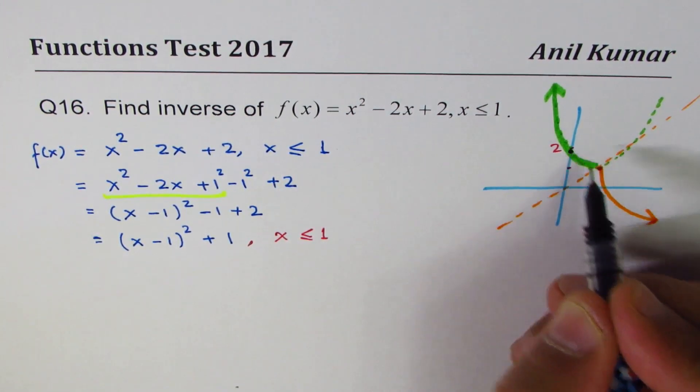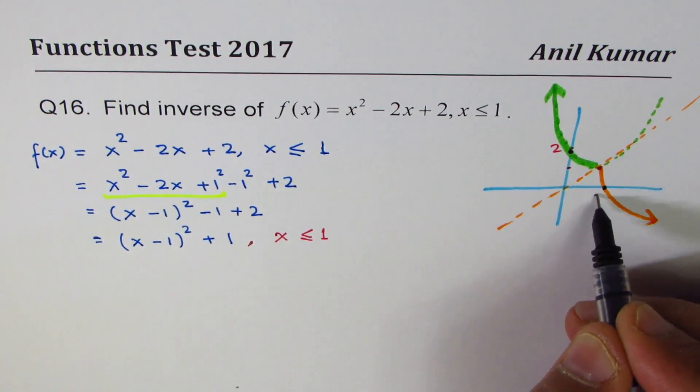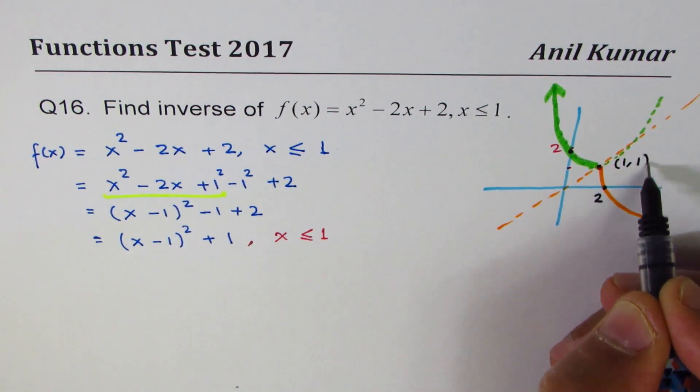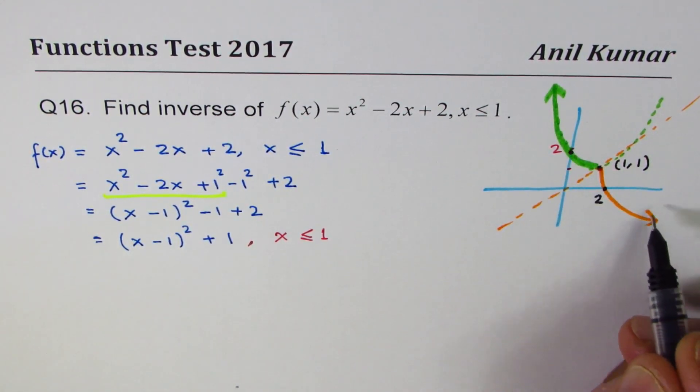You expect this to be a square root function opening like this. This point is (0, 2), which just becomes (2, 0). This is the invariant point (1, 1). That is the inverse of your function.